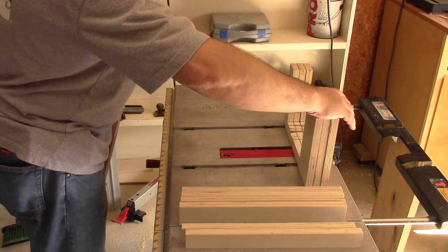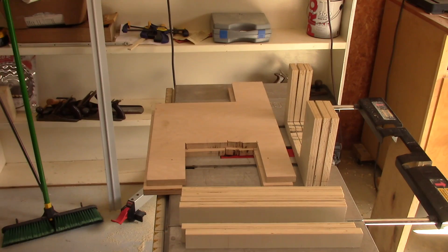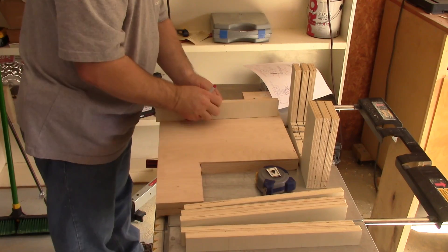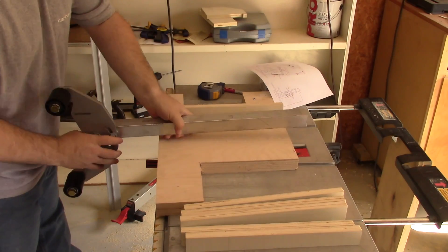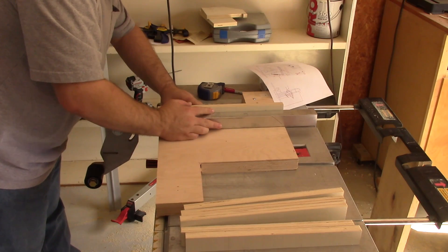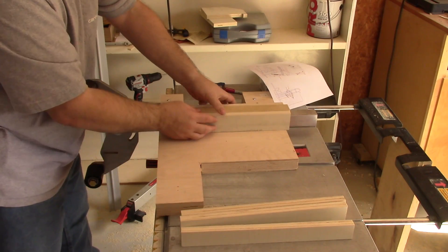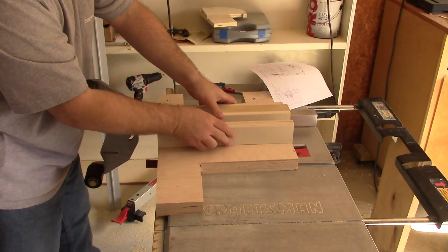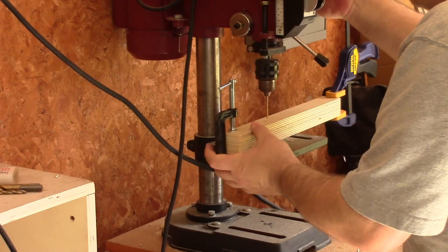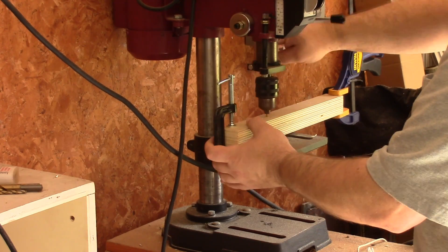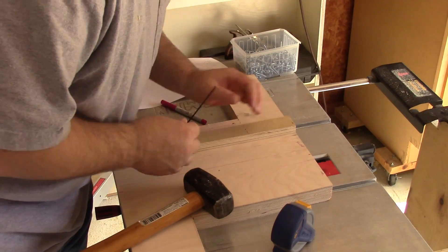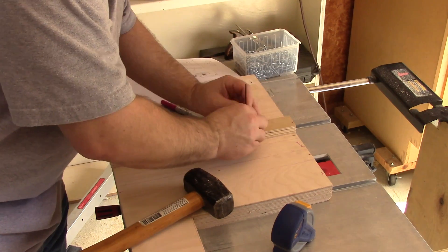I'm going to do a dry fit here to make sure everything goes together as planned and to mark up where the interior dividers will go. These are the floating spacers that fit inside the slide holes that the attachments ride in, and they help hold the attachments in place.